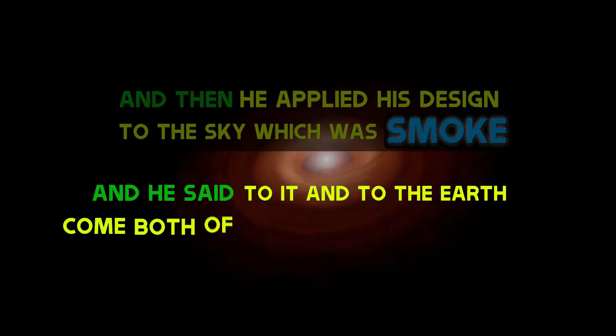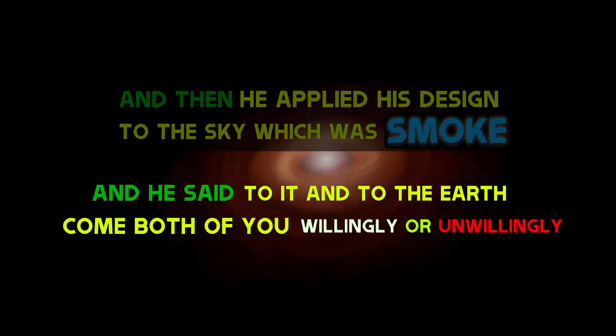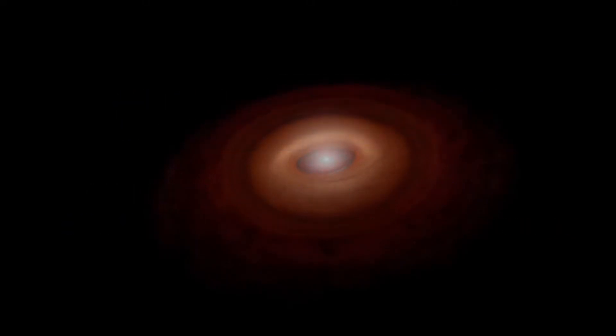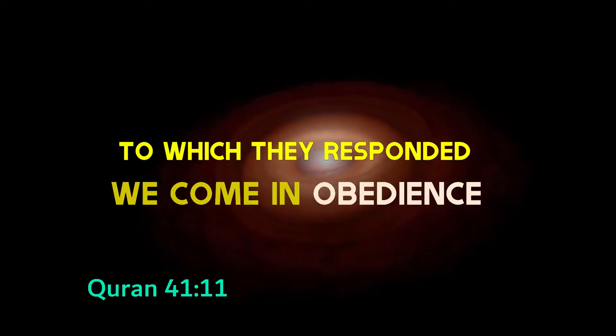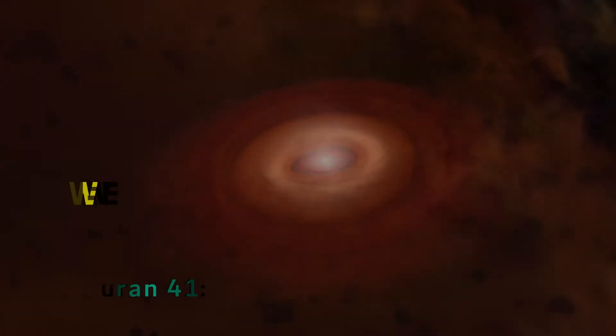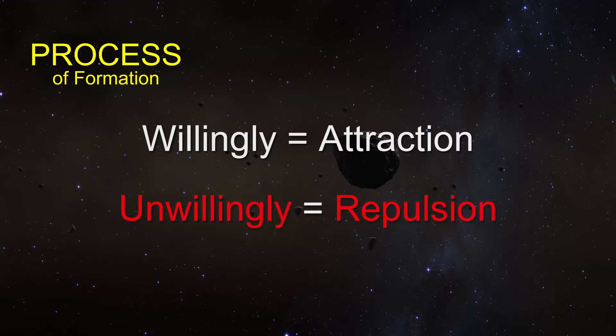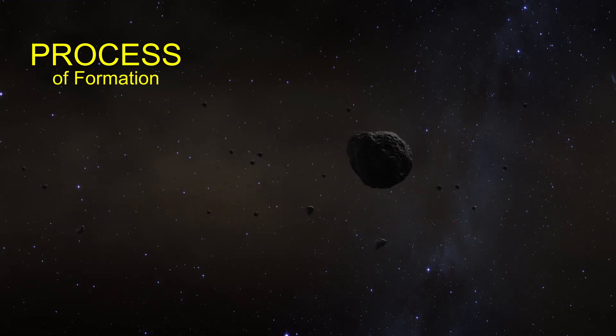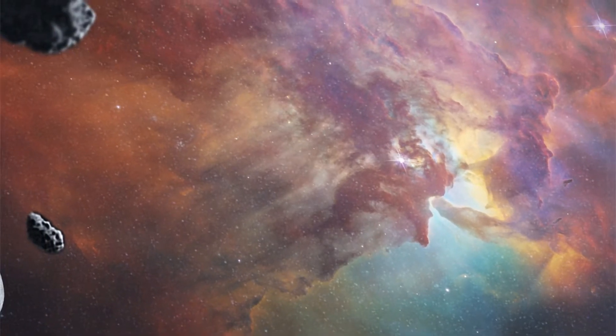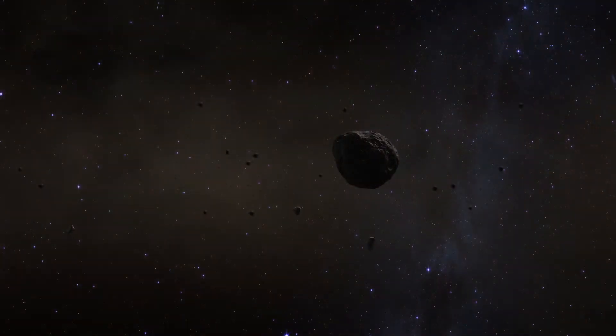And He said to it and to the earth, come both of you willingly or unwillingly, to which both responded, we do come in obedience. Verse 11 also tells us how it was created, willingly or unwillingly, an obvious reference to the forces of attraction and repulsion. So again, science confirms the Quranic explanation of the initial process of how the objects of the solar system formed.